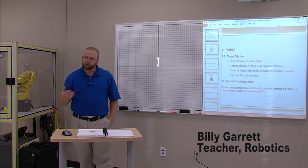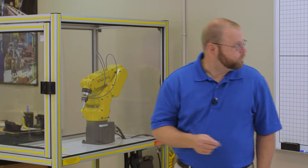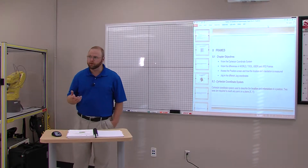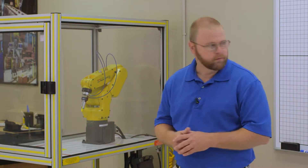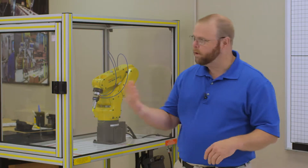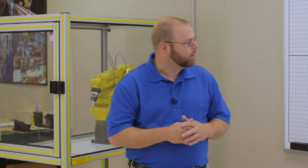We're going to have a lecture today on frames, handling tool and operations programming for a robot. Our objectives for the chapter on frames is to know the Cartesian coordinate system, know the difference in the world, tool, user and job frames, access the position screen, how the location and orientation of the robot is measured, and we'll jog in the different job coordinates. We'll also have one of your students come up and establish a tool frame on the robot.